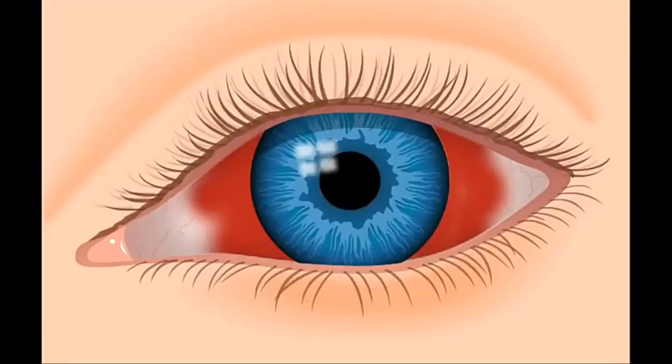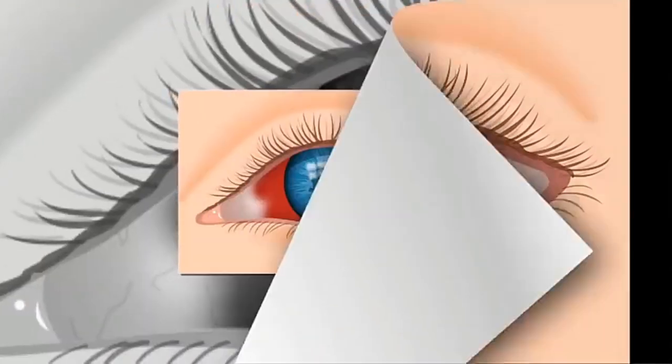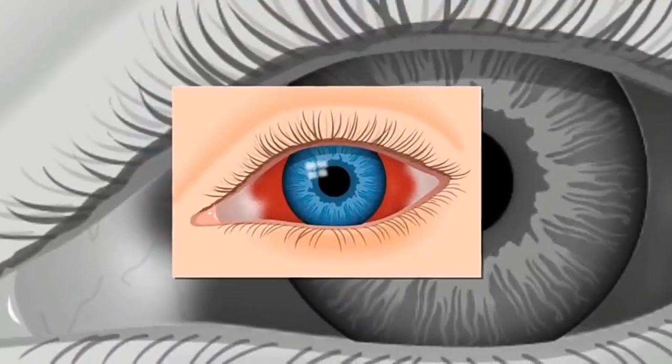An eye hemorrhage is a condition where blood vessels inside the eye rupture and bleed, leaving red splotches on the white of the eye, in the retina, or between the retina and the lens.